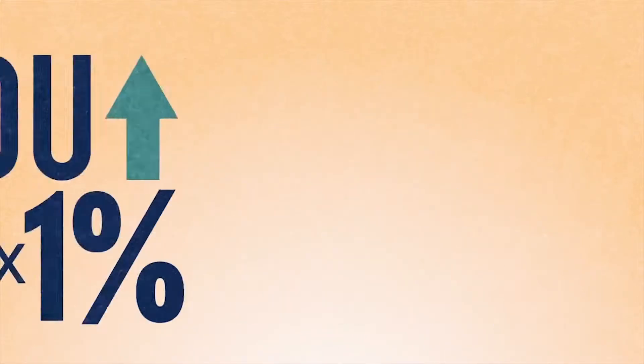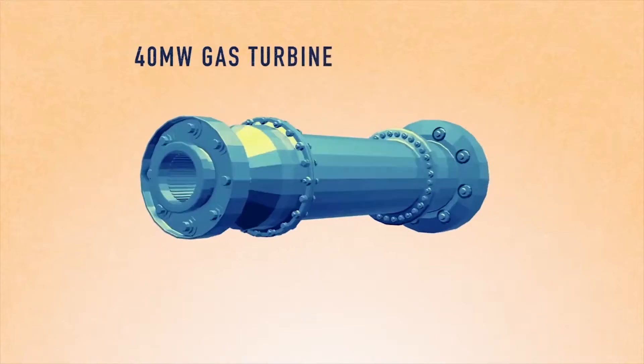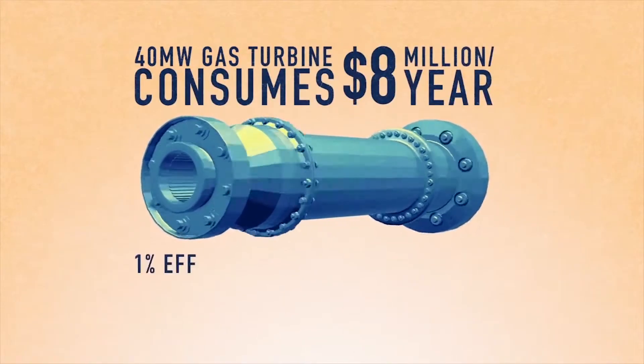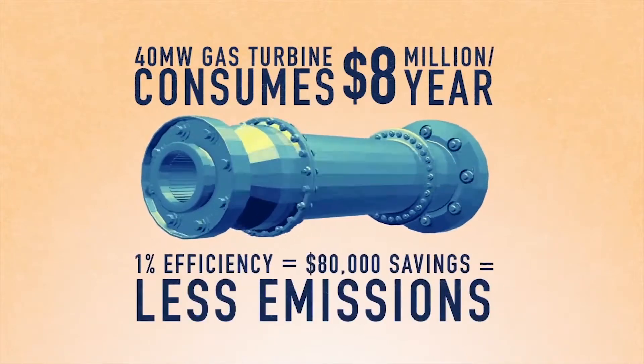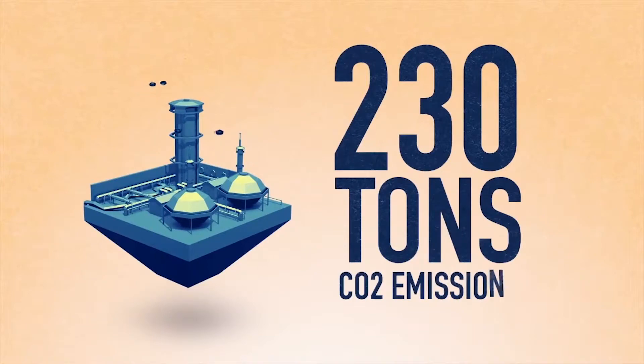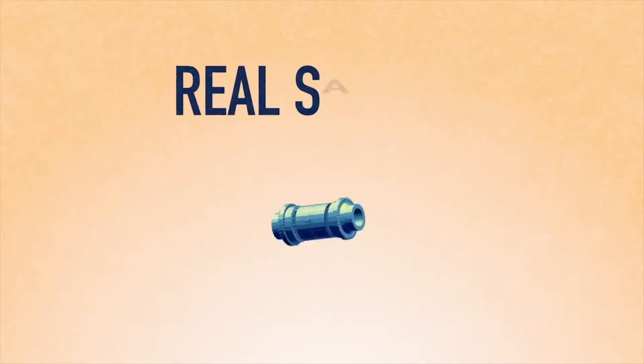On a 40 megawatt gas turbine that consumes eight million dollars in fuel every year, that's a savings of eighty thousand dollars, not to mention more than 230 tons of reduced CO2 emissions. These are real savings enabled by the Cop Flex torque monitoring coupling.